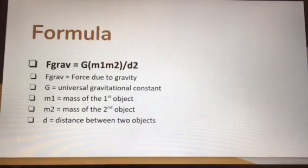F gravity equals force due to gravity, G equals universal gravitational constant, M1 is the mass of the first object, M2 is the mass of the second object, and D is the distance between the two objects.